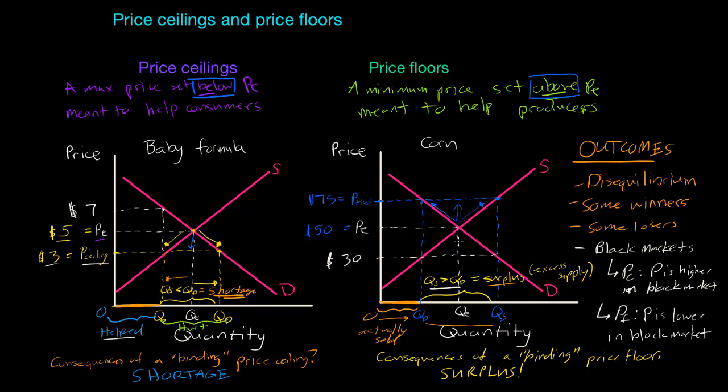In this video, we talked about two different types of price controls, both intended to help one stakeholder in a market. Price ceilings are meant to help consumers; price floors are meant to help producers. But as we've seen in our analysis, there are lots of negative consequences of these types of price controls. In both cases, a disequilibrium will emerge — there will be some winners and some losers — and overall the consequences are generally undesirable because they lead to shortages or surpluses and could lead to the emergence of black markets.